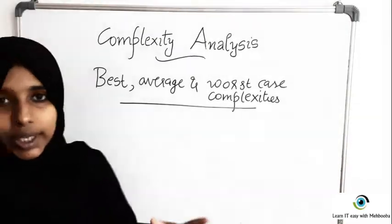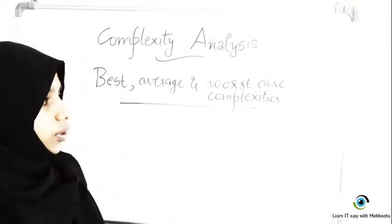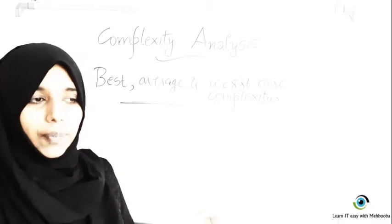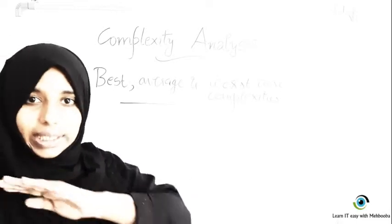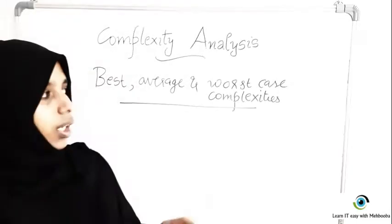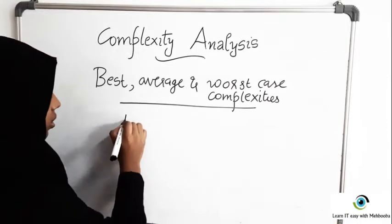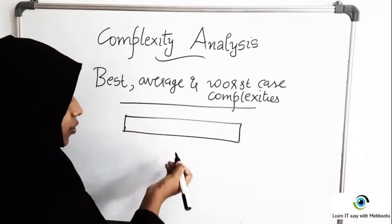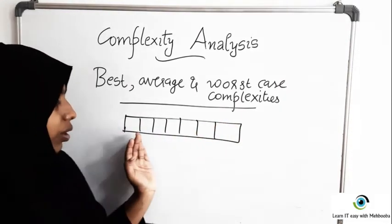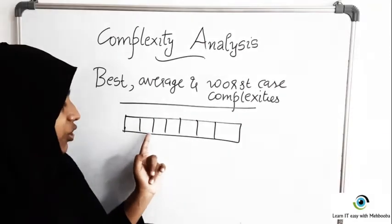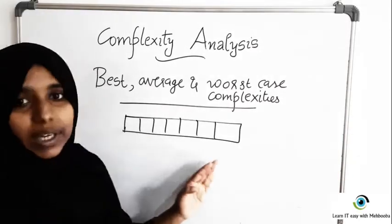To explain all three, I will take the example of linear search. Linear search is the process of finding a particular element in an array, starting from the lowest index and traversing all elements serially, reaching the last index if the element is not found in between. It starts from the beginning and searches each index from left to right until the element is found.